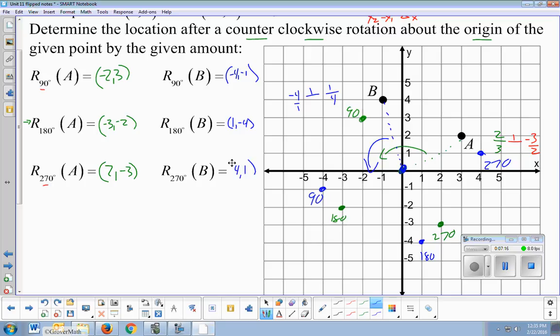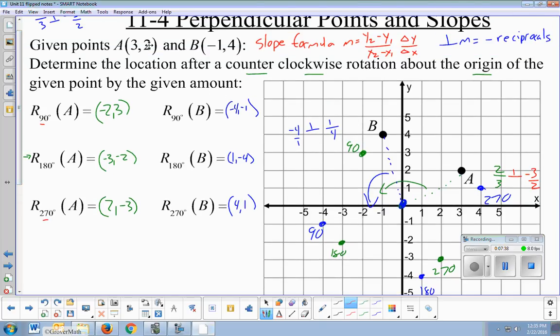Now, these questions are very difficult to do without a graph. Luckily, the back of every Regents exam is scrap graph paper. So if they ask you these type of questions and don't give you a graph, then plot them yourself on that scrap paper and use that. Now, rotating about the origin, we actually have rules. Like A is 3, 2, you just negate them for 180. And for 270 and 90, you flip them and change the sign of one of them.